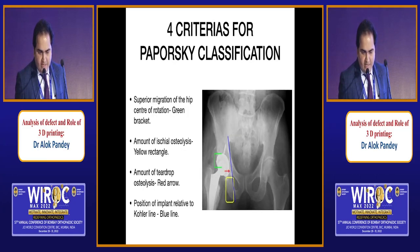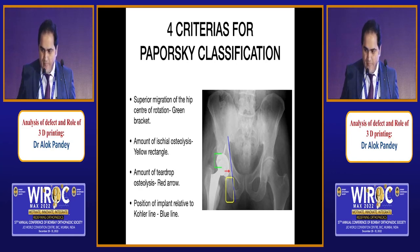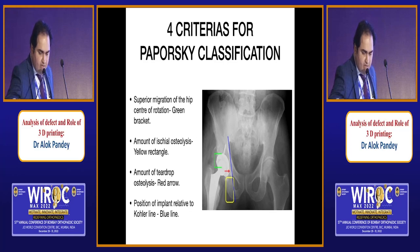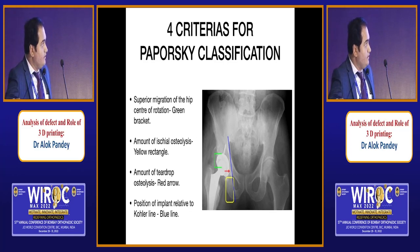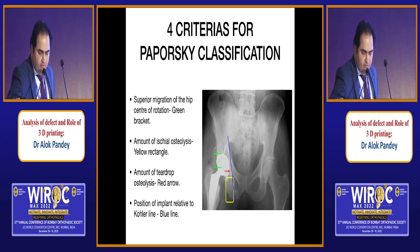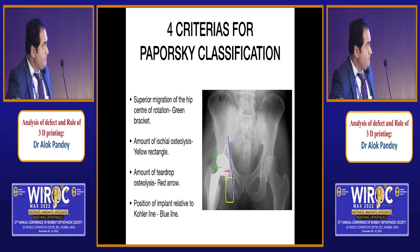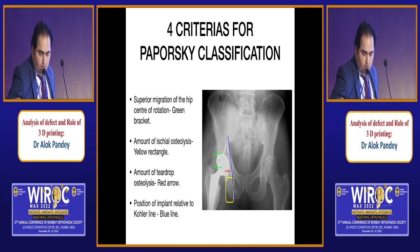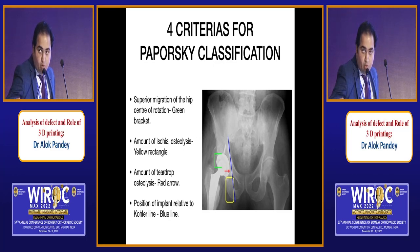There are four criteria needed for the Paprosky classification. The green bracket shows the center of hip migration, measured from the opposite hip. The yellow rectangle shows the amount of ischial osteolysis. The red arrow shows the amount of teardrop osteolysis, and the blue line marks the position of the implant relative to the Kohler line.